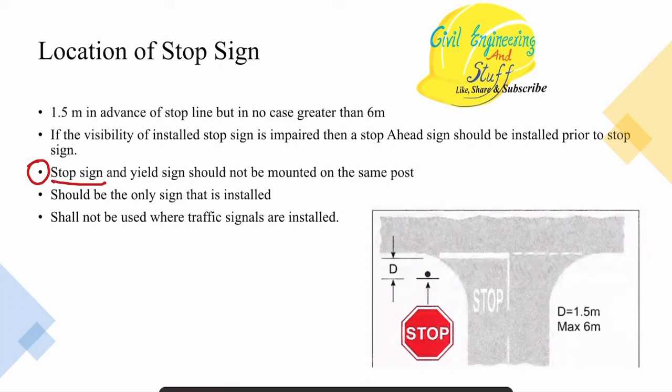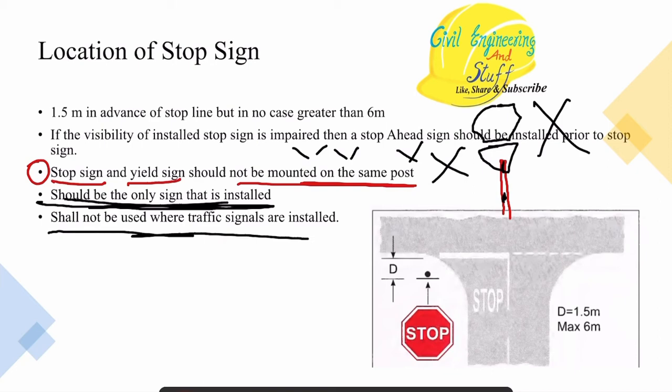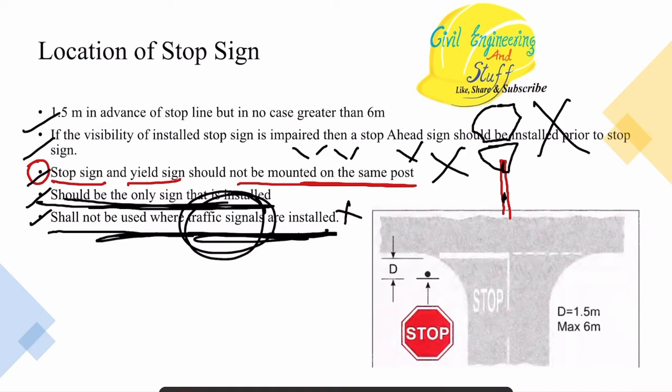A very important point: a stop sign and yield sign should not be mounted on the same post. This is a wrong practice not recommended by the code. Wherever there is a stop sign it should be the only sign installed. Stop signs should also not be used where traffic signals are installed — wherever traffic signals are installed, we should not use a stop sign.